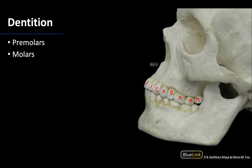In terms of the incisors on the mandibular teeth, these are going to be smaller than what you had on the maxillary portion, but they are going to be similar in shape — just on a much smaller scale. And so those are the dentition.